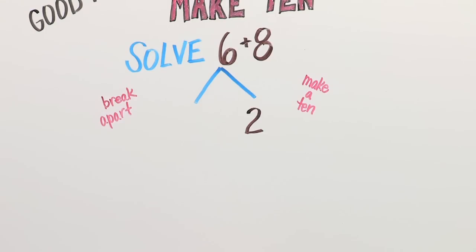Eight's missing number partner is two. We know six is the whole. We know one part is two. What is the other part? Four. The other part is four.